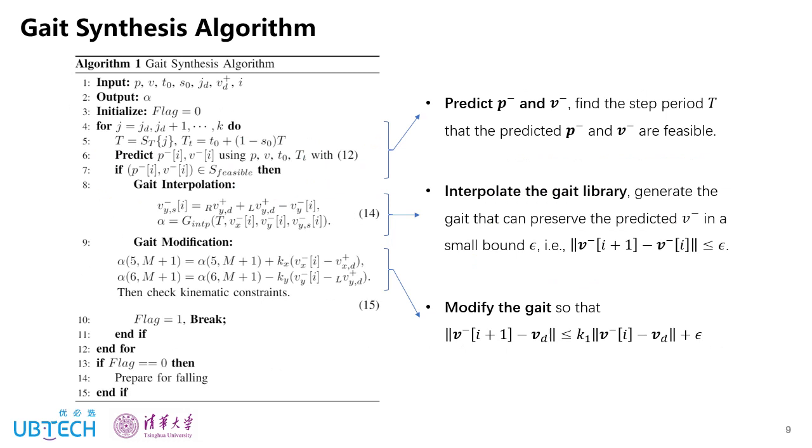Next, I will introduce the online gate synthesizer. It contains three steps. The first step is to predict the pre-impact COM position and velocity P-minus and V-minus, then find the step period T that is feasible. And the second step is to interpolate the gate library to generate the gate that can preserve the V-minus in a small error bound. And the last step is to modify this gate so that V-minus will satisfy the stability constraints that we proposed.